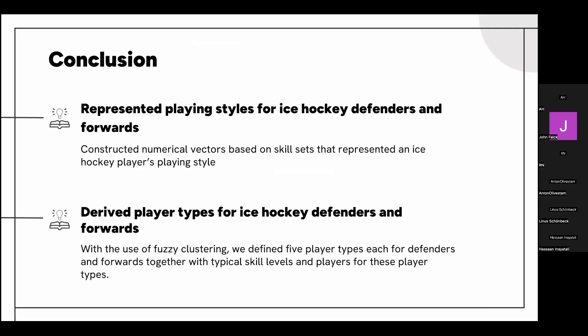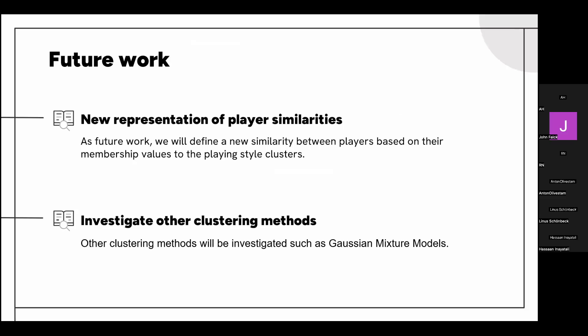For future work, we plan to calculate player similarity based on their membership vectors from the clustering process, allowing us to compare players by their overall playing style rather than individual skills. It would also be interesting to investigate how successful teams' rosters compare to less successful teams to see if there are any patterns. Another branch worth exploring is applying a different fuzzy clustering algorithm, such as Gaussian mixture models, to see what player types can be derived.